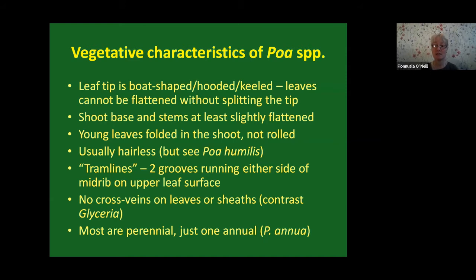A good characteristic of Poa species is two tramlines — two grooves running either side of the midrib on the upper leaf surface. The best way to see these is to hold the leaf up to the light with a hand lens, where you'll see two pale parallel lines on either side of the midrib. Alternatively, curve the leaf over your finger and look with a hand lens. These tramlines help distinguish Poa from other genera. Most Poa species in Ireland and Britain are perennial; the one annual species is Poa annua.